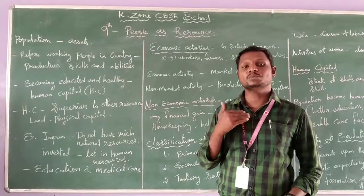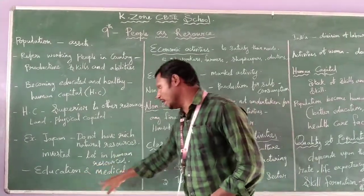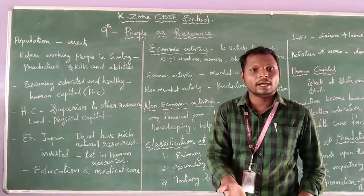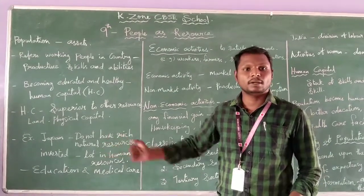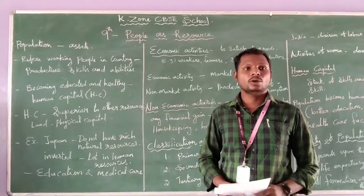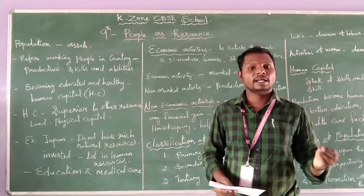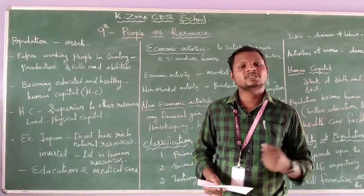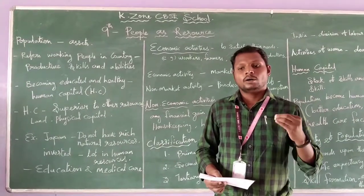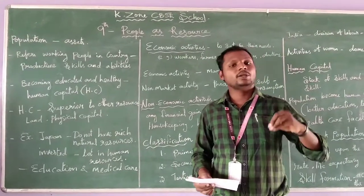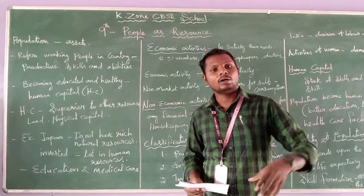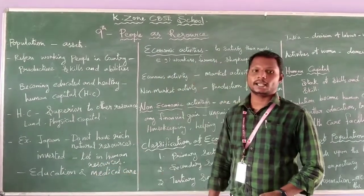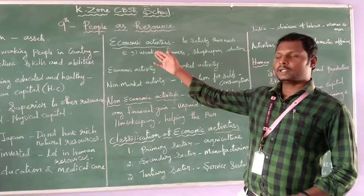That's why Japan is called a developed country. When we invest more in education and medical care, only then can we become a developed country like Japan. We are currently a developing country, and to move forward we need to invest more in these two areas: education and medical care.